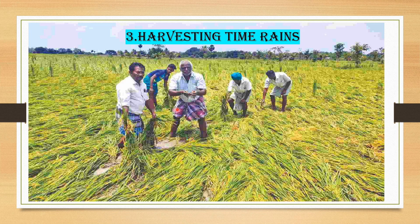The next problem is harvesting time rains. This is a major problem in the present day scenario. Farmers do agriculture and wait for the result of the crop, but rains at the time of harvesting affect the crop yield and cause loss of grains. This is a major reason why farmers are not continuing in agriculture.